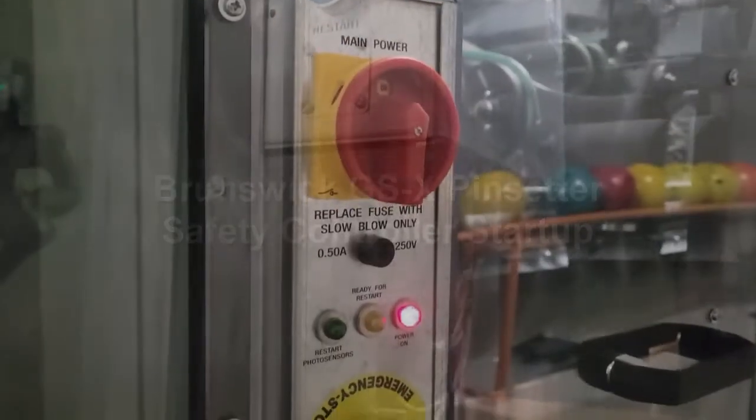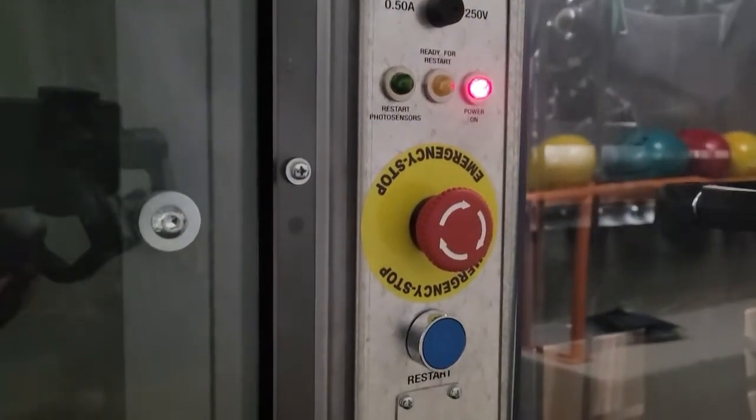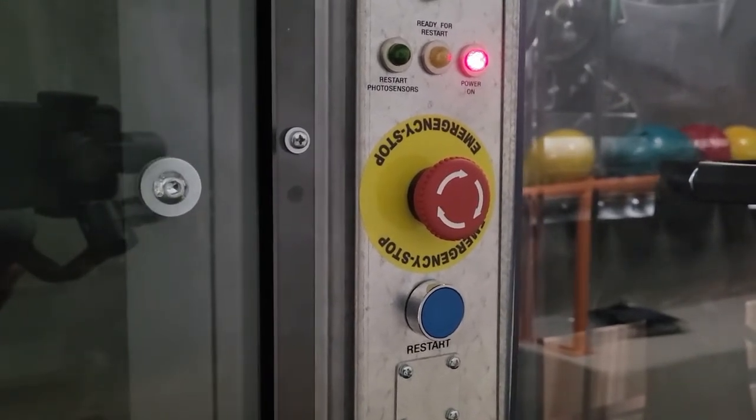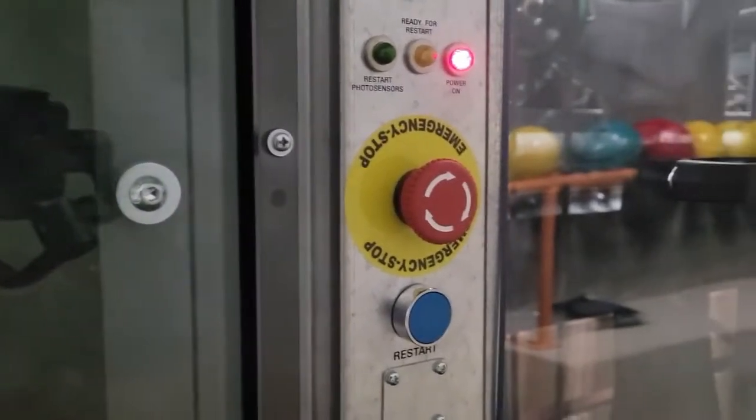To begin, let's cover the basic system components and their function. We have the safety controller, typically located on the left-hand side of the elevator of the left-hand machine.